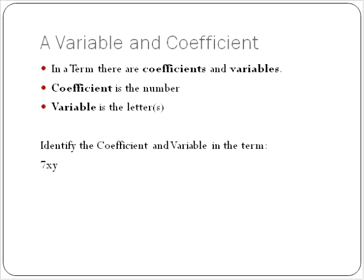Now let's talk about the other vocabulary. I mentioned the words coefficient and variable. In a term, for example the term 7xy, inside each term there are coefficients and variables. Some terms may not have variables if it's just a number, but in this case we have a coefficient and a variable. The coefficient refers to the number in the front. The variable refers to the letter or letters that follow the coefficient.